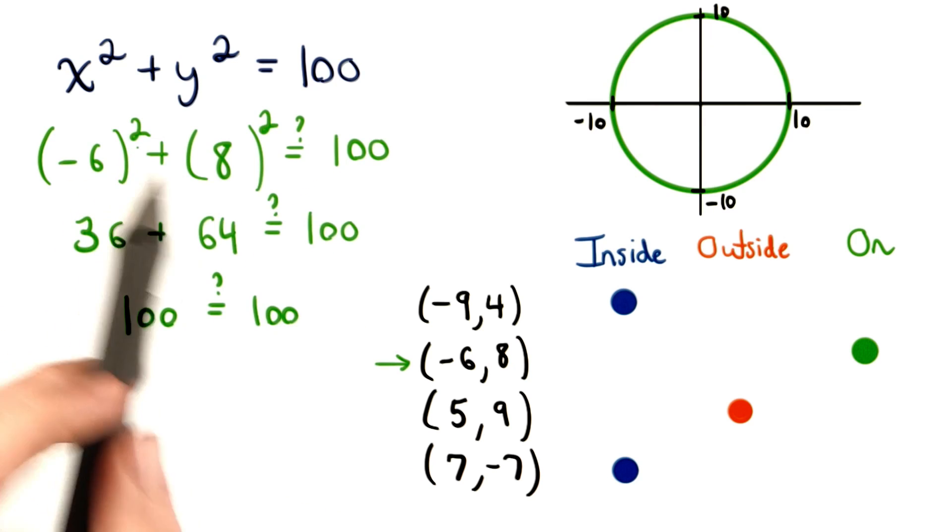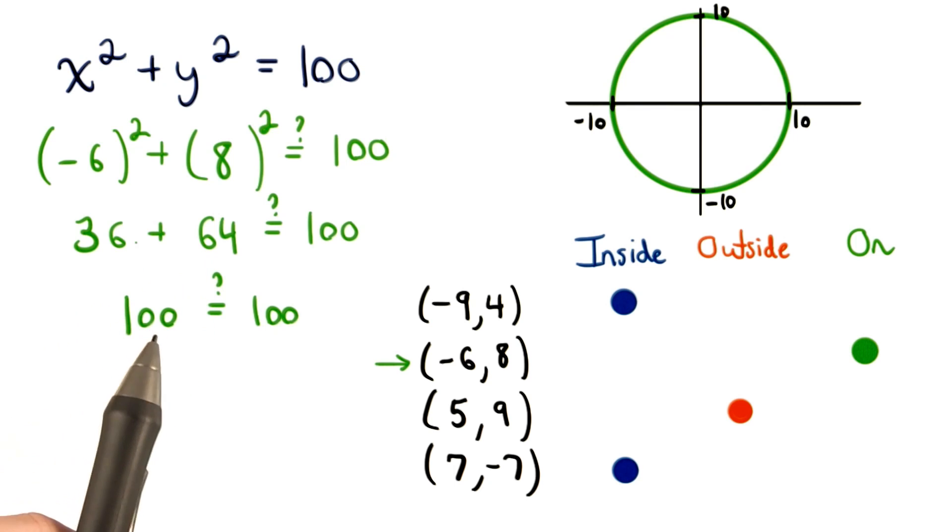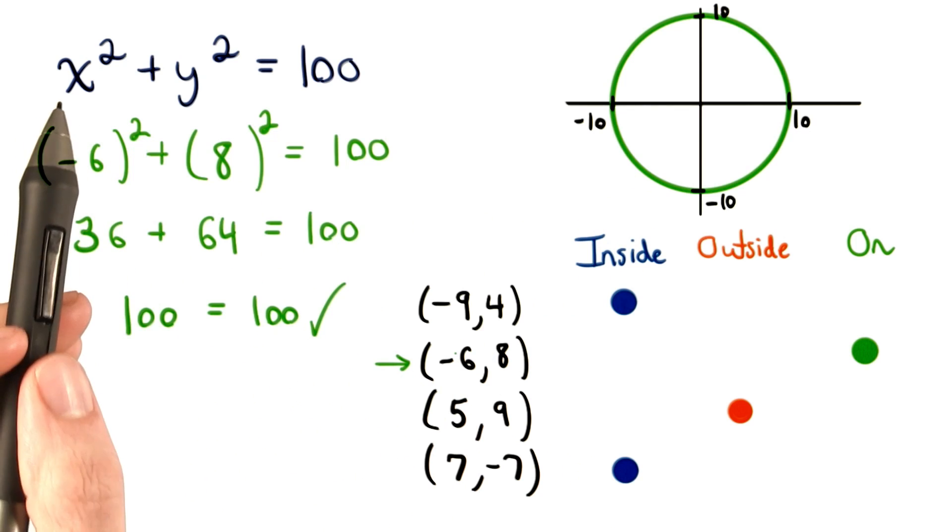So, squaring negative 6 and squaring 8, we'll get 36 plus 64, which equals 100. Yes, it turns out that this statement is true. This means that the point (-6, 8) is a point on our circle, since it satisfies the equation.